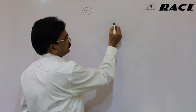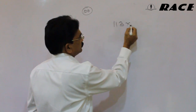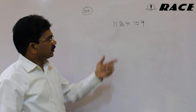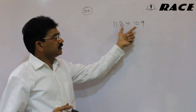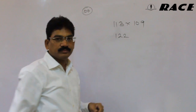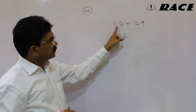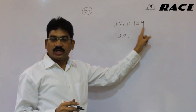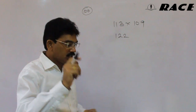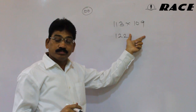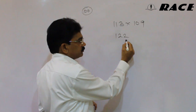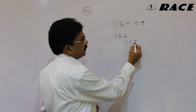Take another example: 113 into 109. Here 113 plus 9 is 122, which is the first part. The second part is 13 into 9, which is 117. We got 3 digits in the second part, but the second part should have only 2 digits. So we carry the extra digit: carry 1, and write 17.